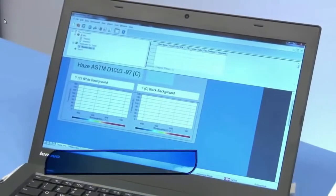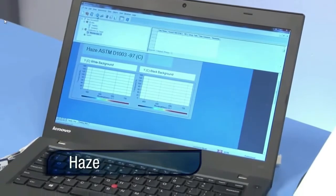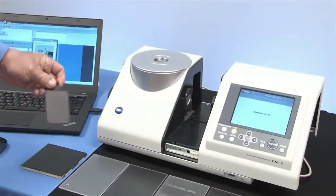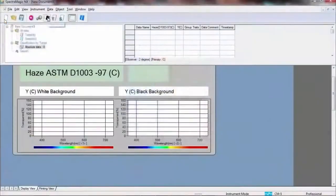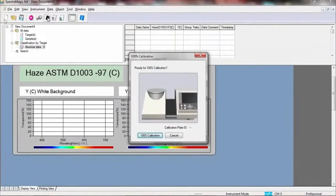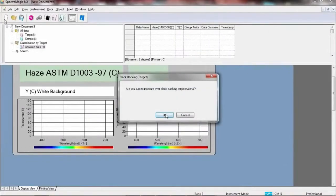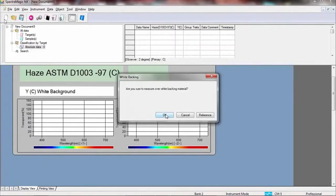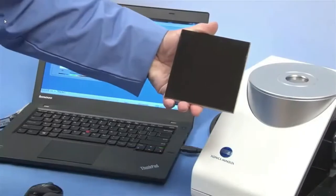For haze measurements, the CM5 is driven by user-friendly Konica Minolta Sensing SpectraMagic NX software. This procedure requires a measurement over a contrasting background. When creating a target, you will be prompted to take two measurements for each reading, one over white and the other over black. The reflectance port must be blocked.